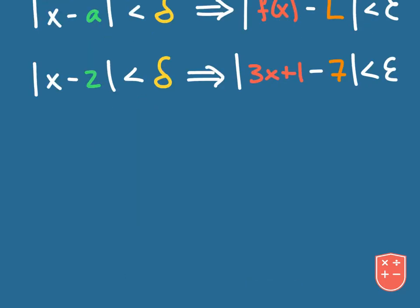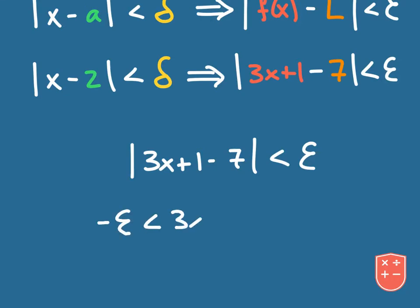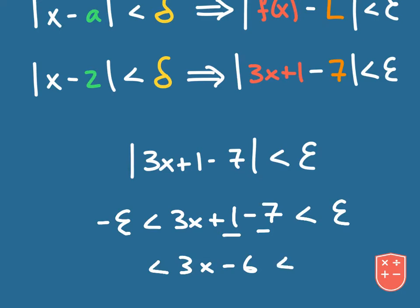When I go through the process of verifying, I want to use this part first and work backwards. Let's write this out and solve this absolute value inequality for x. My first step is to drop the absolute value symbols and write: negative epsilon is less than 3x plus 1 minus 7 is less than positive epsilon. Let's clean this up — 1 minus 7 gives us negative 6, so we've got negative epsilon less than 3x minus 6 less than positive epsilon.